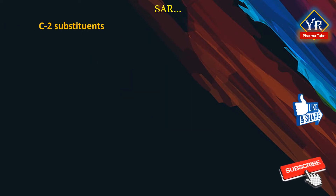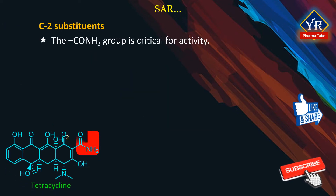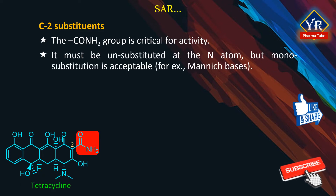C2 substituents. The carboxamide moiety is present in most naturally occurring tetracyclines and this group is crucial for antibacterial activity. It is best that the amide group is unsubstituted at the nitrogen atom, but monosubstitution is acceptable if in the form of activated alkyl aminomethylamides, often known as Mannich bases.